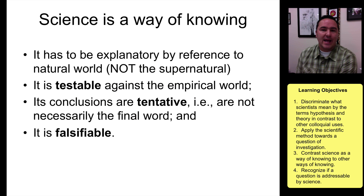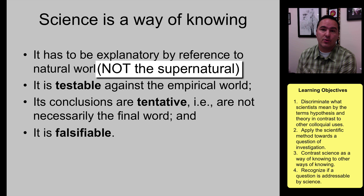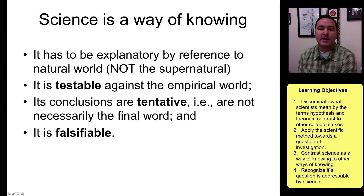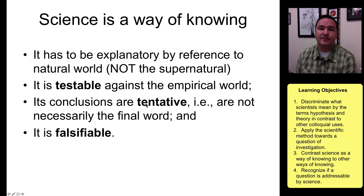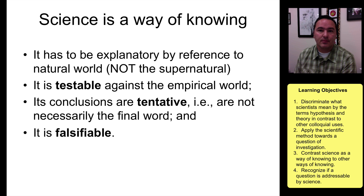Science as a way of knowing must always be used to explain the natural world. Science cannot touch or explain the supernatural, because science is testable against only the empirical world. We do gain lots of knowledge, but all of that knowledge remains tentative because we never prove anything true — we can only prove things false. We never say with absolute certainty that something is true; what we can say is that we are very confident this is the correct answer.